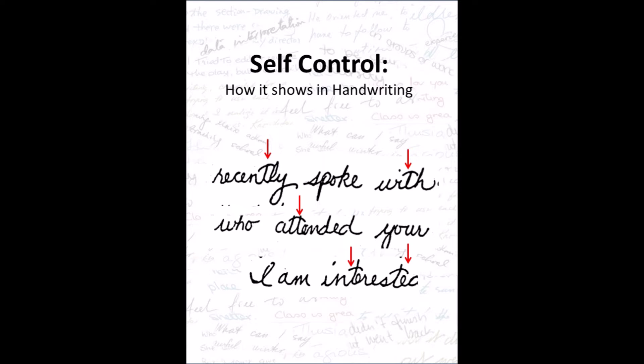Self-control and how it shows in handwriting. Self-control shows in writing where the t-bar is an inverted saucer shape, an upside down saucer. The more often it appears and the more curved the shape, the stronger the trait.